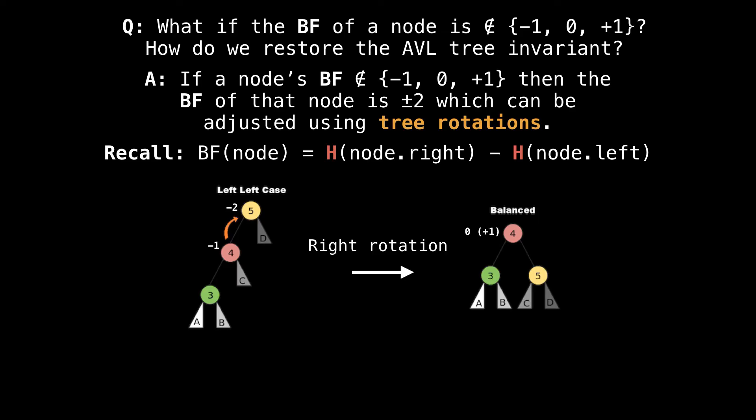The first such case is when the tree is what we call left heavy, and there are two left child nodes. This is an easy case to fix because all we need to do is perform a right rotation about the yellow node to balance.